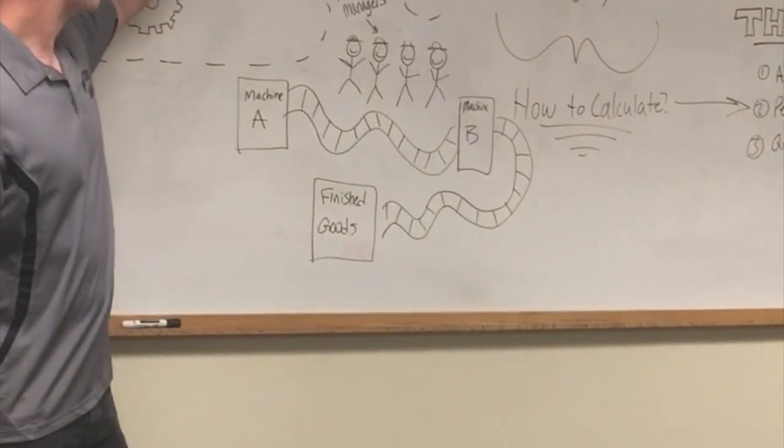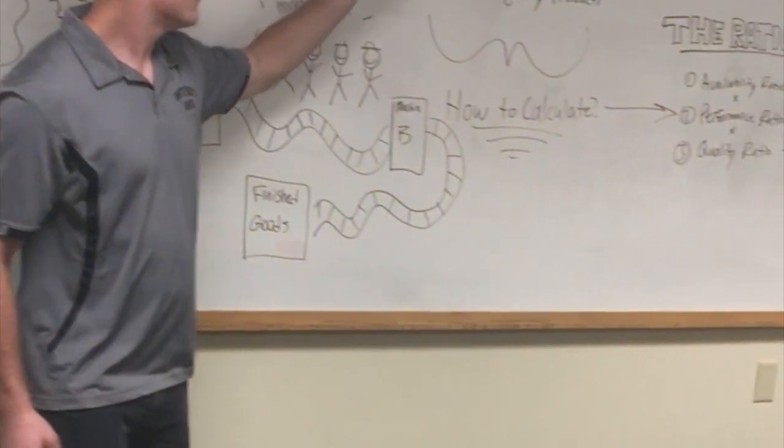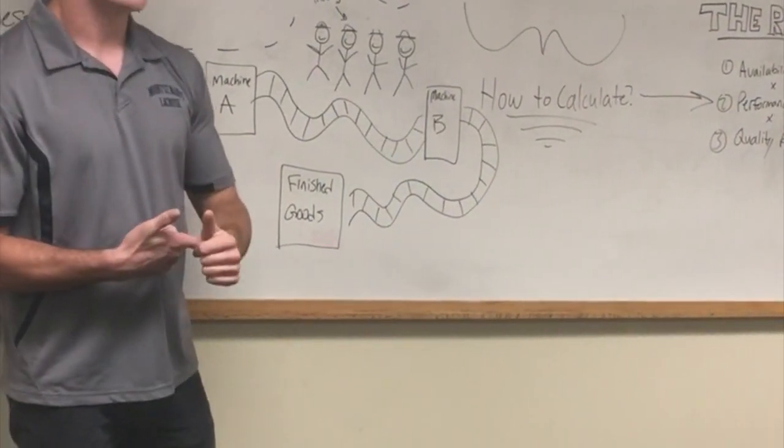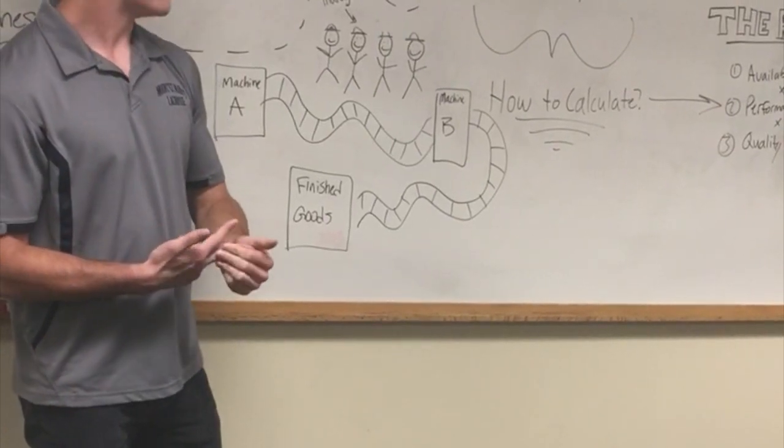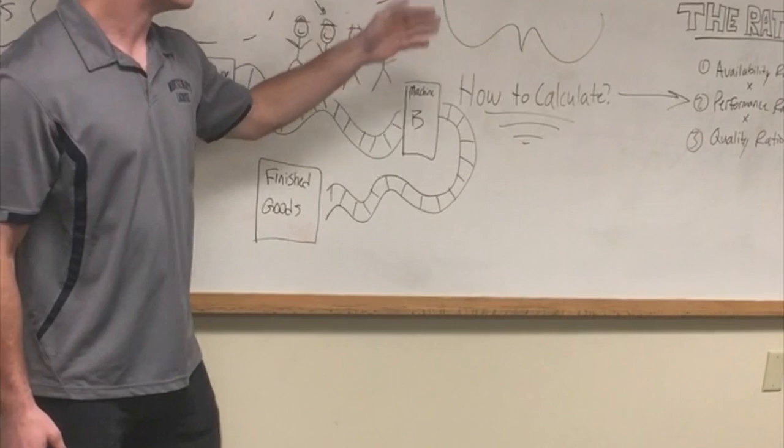So what is overall equipment effectiveness? The Chaco definition is going to be this. It is the measure of a machine's ability to run as planned, produce as per rated capacity, and produce quality products through each machine on a cumulative effect.